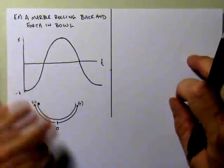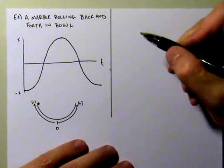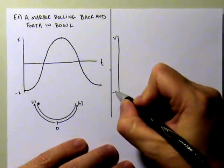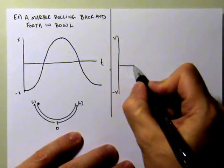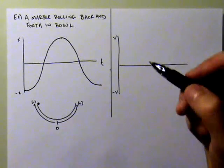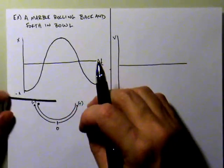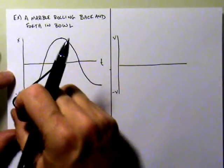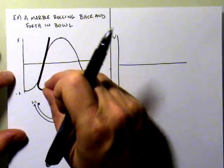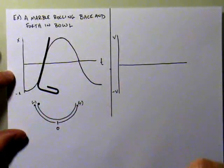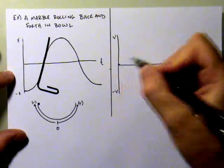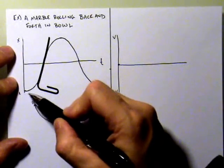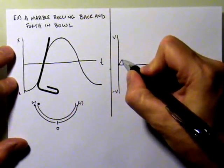Now the real question is, what does the velocity-time graph look like? Here's positive V, here's negative V, and our time axis. In the beginning we had no velocity at all. Then I increased to a maximum velocity where my slope on the position-time graph is the greatest. So I started with no velocity and my velocity became increasingly positive — from very flat to very steep in the positive direction on the position-time graph. That's going to look something like this.